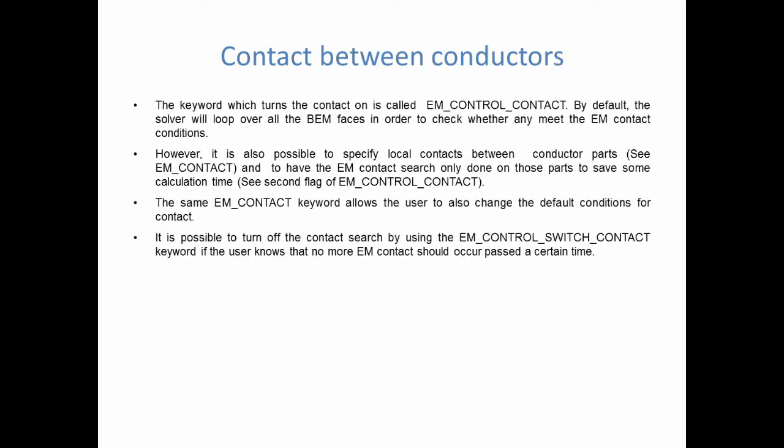There's a distance criterion which by default is based on the element size, but which the user can change to a fixed value. Regarding keywords, the one which turns the contact on is called EM control contact. By default, the solver will loop over all the BEM faces to check whether any meet the EM contact conditions. However, it is also possible to specify local contacts between parts using the EM contact keyword, having the contact search done only on those parts in order to save some calculation time.